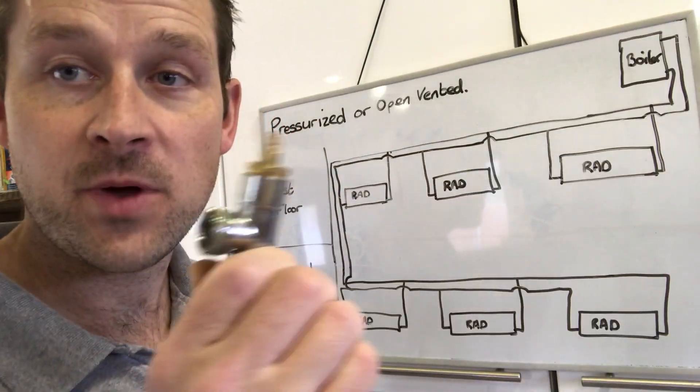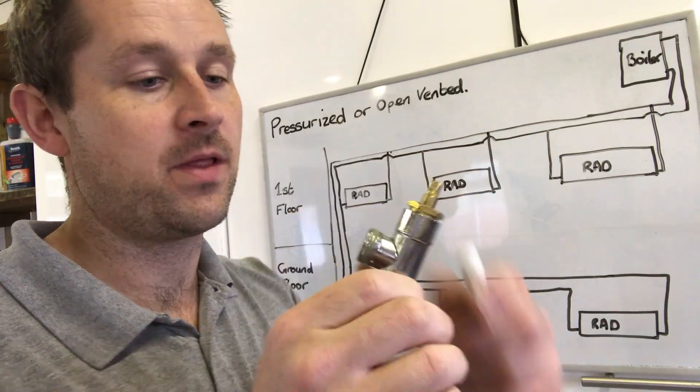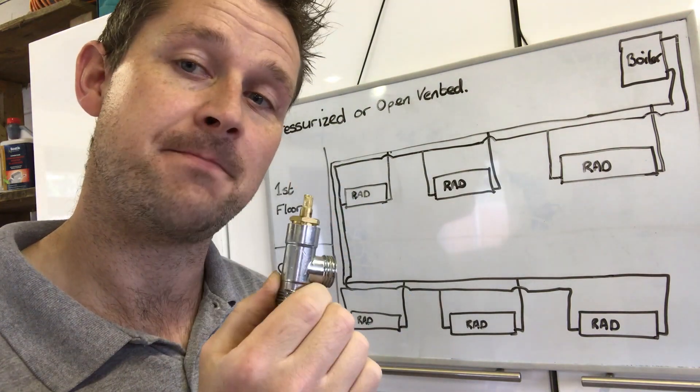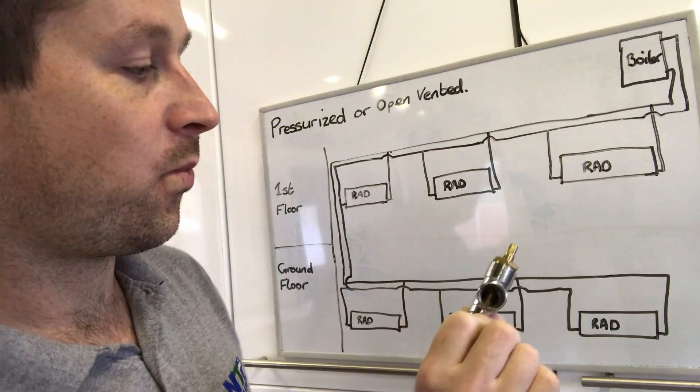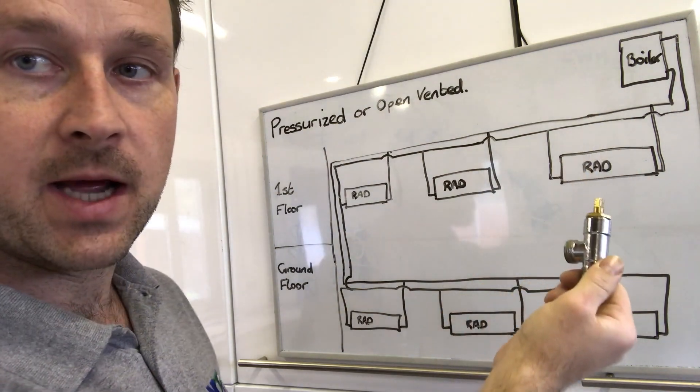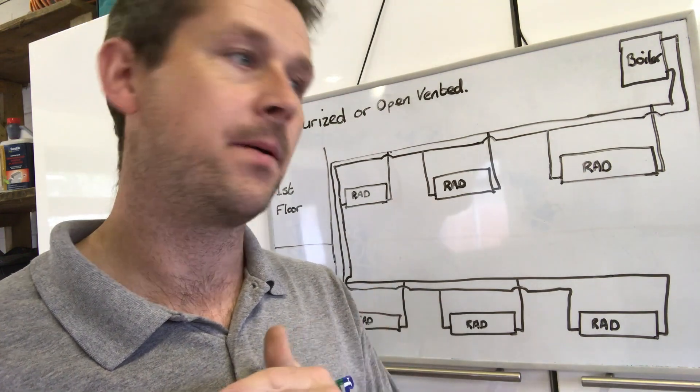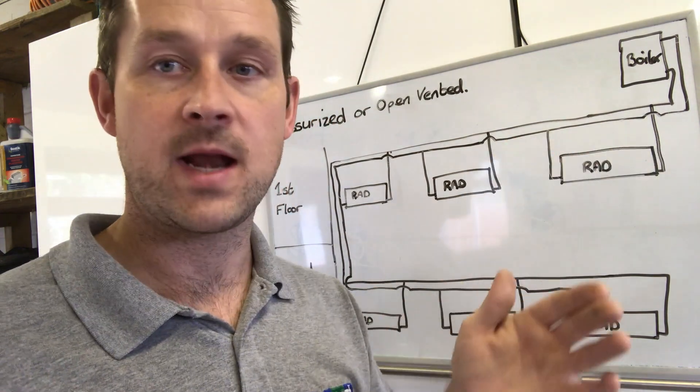Then we come on to the lock shield. Now this is for us plumbers. This is what we use to control the whole system. We put this on one side of the radiator. It can be left, it can be the right hand side. Generally, try and match up if you're putting one radiator or a couple of radiators into an existing property.